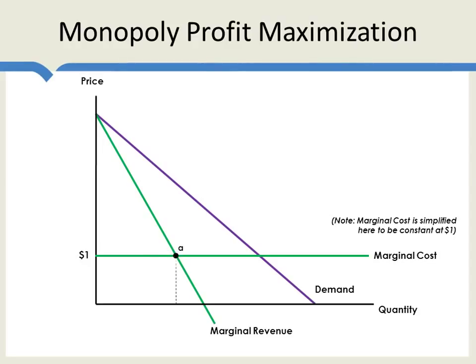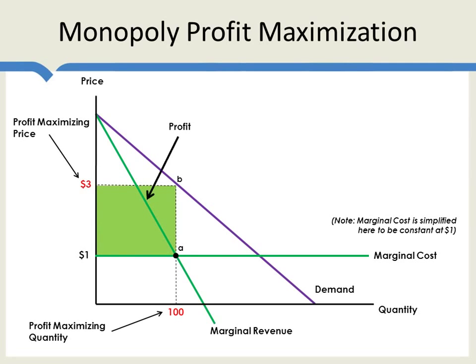At point A, we find the profit-maximizing quantity, and then we ask what is the most the monopolist can sell this quantity for per unit — it's $3 per unit. The profit is then given by this green area, and the deadweight loss is given by this area here. The deadweight loss happens because consumers are willing to pay — they value the product more than its marginal cost — but the monopolist is not willing to sell to these consumers because to do so would require lowering the price and thus lowering profits.